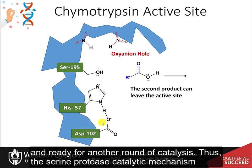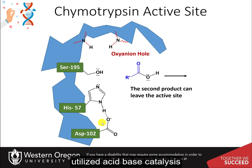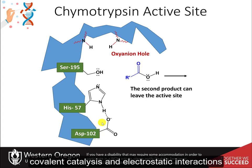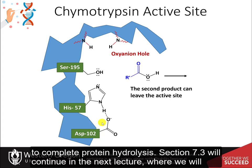Thus, the serine protease catalytic mechanism utilized acid-base catalysis, desolvation, covalent catalysis, and electrostatic interactions to complete protein hydrolysis. Section 7.3 will continue in the next lecture, where we will discuss another strategy that enzymes use to mediate reactions.